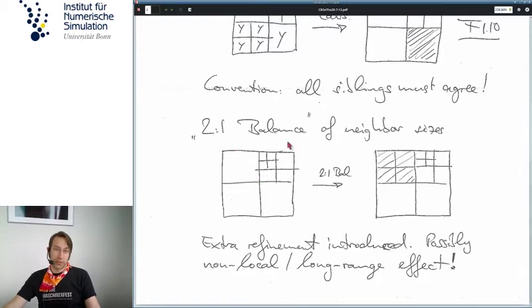So there is another operation called 2-to-1 balance, which would find all these neighborhoods where we have more than a factor 2 in size difference between neighbor elements. Then it would insert refinement in this case here to make sure that we only have a 2-to-1 size relation between neighbor elements. So this is a global algorithm in the sense that you can imagine if we made this element even smaller, we would need a propagation of refinements that can spread quite far through the mesh.